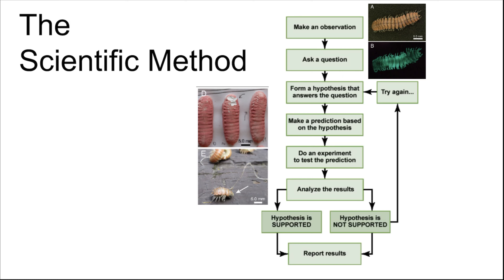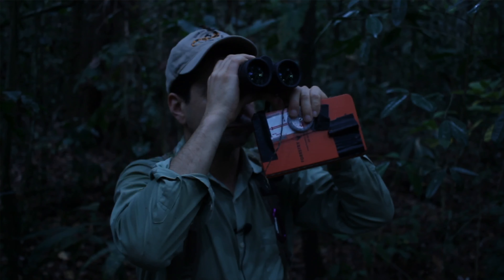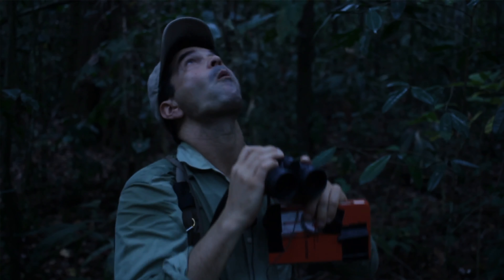Then you do an experiment to test the prediction. You make the clay models, go out, do different replicates, and have your science friends help you. Then you gather the data and analyze the results. Those results either support your hypothesis or do not support it, then you report the results in a scientific paper. That paper goes to a journal. What's important in this process is that you're letting nature tell you how it works.